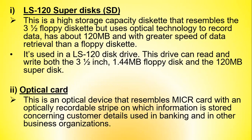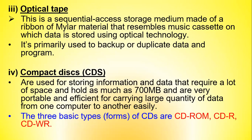The LS120 super disk is a high storage capacity diskette that resembles the three-and-a-half inch floppy diskette but uses optical technology to record data and has about 120 MB capacity with greater speed of data retrieval than a floppy diskette; it is used in an LS120 disk drive that can read and write both 1.44 MB floppy disks and 120 MB super disks. The optical card is an optical device that resembles a microcard with an optical recordable stripe on which customer information is stored, used in banking and other business organizations. Optical tape is a sequential access storage medium made of a ribbon of metal material resembling a music cassette on which data is stored using optical technology, primarily used for backup or to duplicate data and programs.